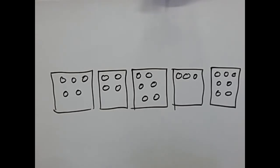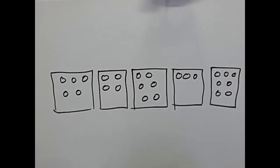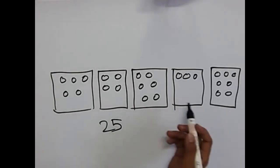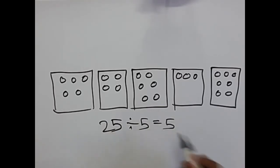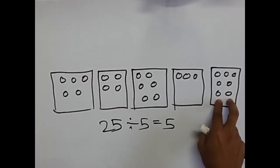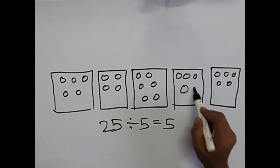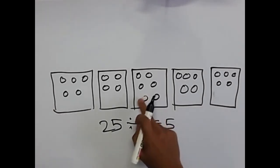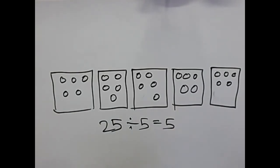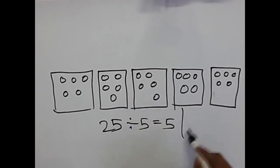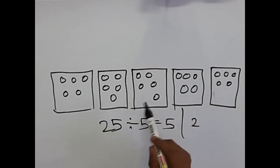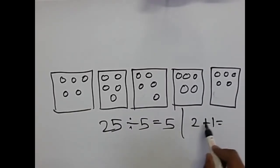Let's take another example with 5 boxes where candies are divided unequally. We have to remove candies from boxes which have more than the average and put them into boxes with fewer. Total candies is 25, number of boxes is 5, so 25 divided by 5 equals 5 — there should be 5 candies in each box. Take 2 candies from box 5 and put them into box 4 — they equalize. Take 1 candy from box 3 and put it into box 2 — they equalize. So total moves required is 3.